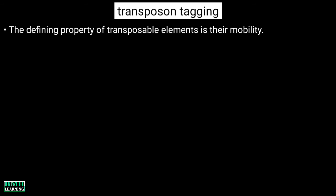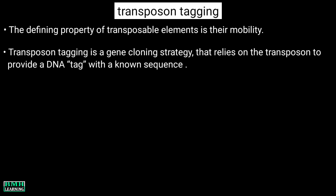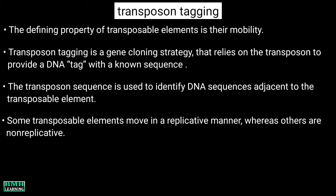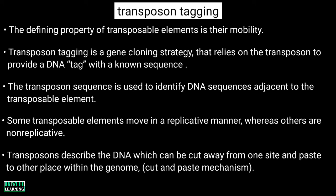The second type of gene tagging is transposon tagging. The defining property of transposable elements is their mobility — they are genetic elements that can move from one position to another in the genome. Transposon tagging is a gene cloning strategy that relies on the transposon to provide a DNA tag with a known sequence. The transposon sequence is used to identify DNA sequences adjacent to the transposable element. Some transposable elements move in a replicative manner, whereas others are non-replicative, meaning they move without making a copy of themselves. Transposons describe the DNA which can be cut away from one site and pasted to another place within the genome — this is called the cut and paste mechanism.